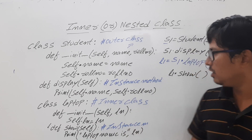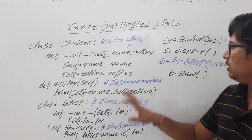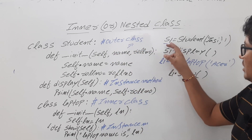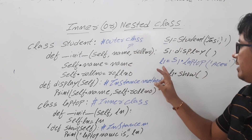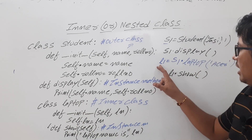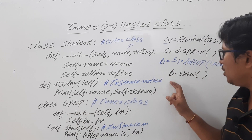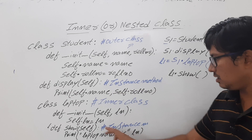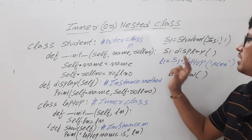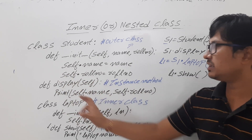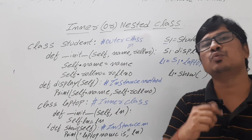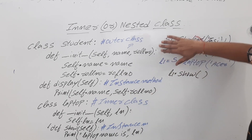So we created one object for the outer class, then with the help of that outer class object we created an object for the inner class. With the inner class object we access methods of the inner class, and with the outer class object we access methods of the outer class.